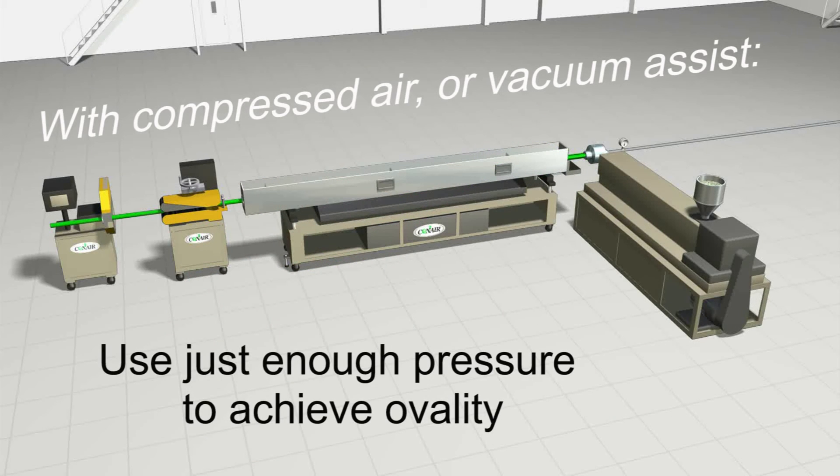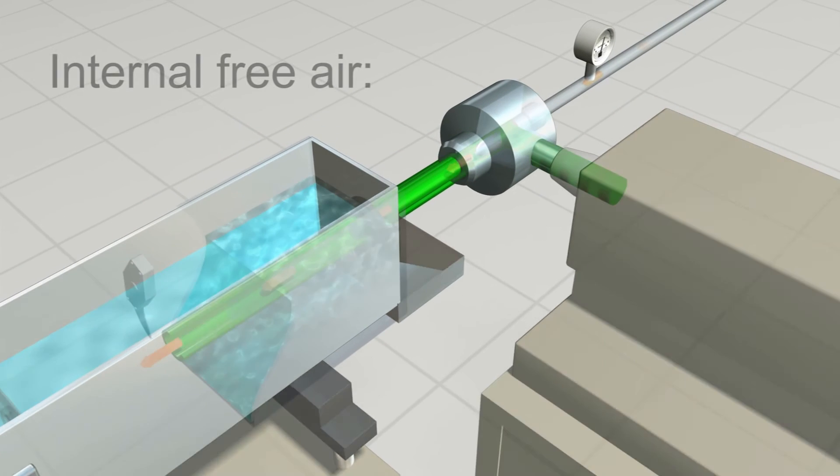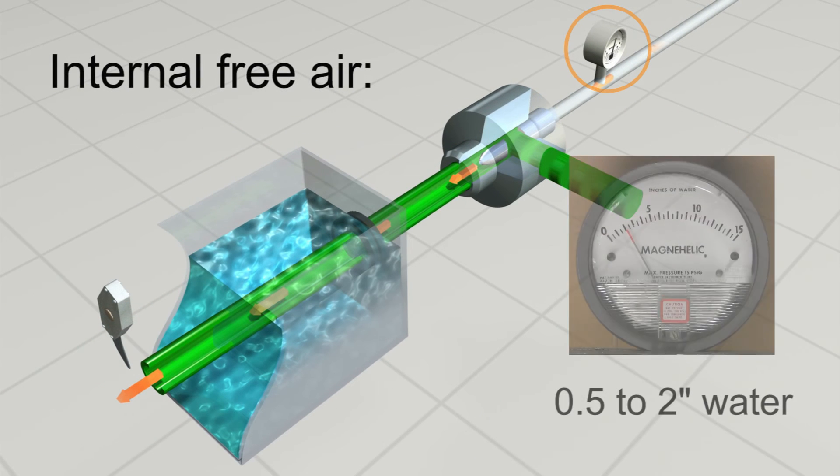With either technique, it is always best to use just enough pressure to achieve ovality. With internal free air, one half to two inches of water is a good zone for optimum precision.